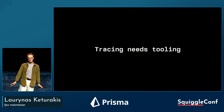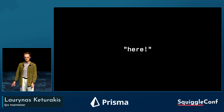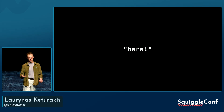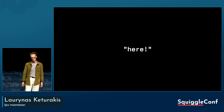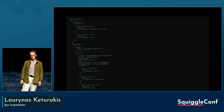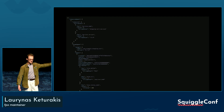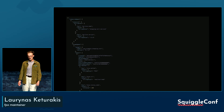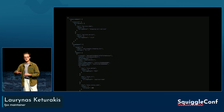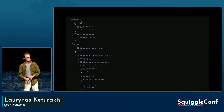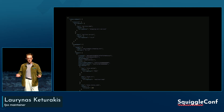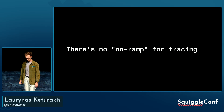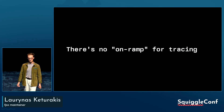The other piece is that tracing needs tooling to be useful. If we go back to our 'here' example, that's five characters you log into standard out and you get information — low effort to value. Meanwhile, a fully declared trace is going to look something like this — we can't just read JSON. You need to send this data somewhere to be processed and visualized. In the current environment, you'd probably have to spin up Docker and something to collect these traces. All of this means there's no on-ramp for tracing.